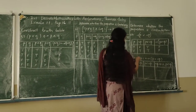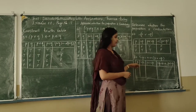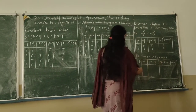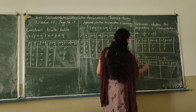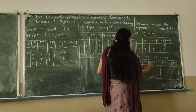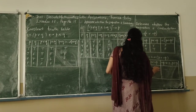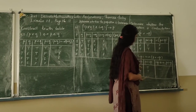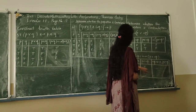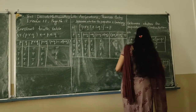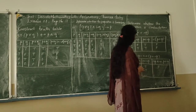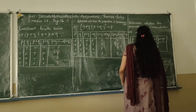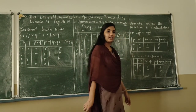In the next question, we also check whether the given proposition is a contradiction. The proposition is: negation P biconditional (P or negation Q). P or negation Q gives: true or false = true, false or true = true. Then negation P biconditional (P or negation Q) gives: false biconditional true = false, true biconditional true = true. So the proposition is not always false, hence it is not a contradiction.